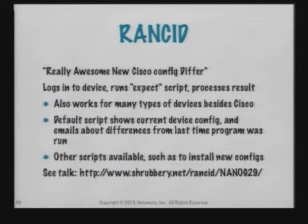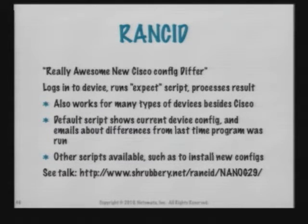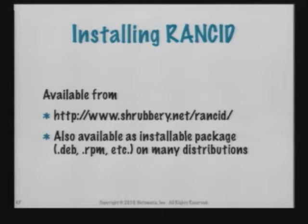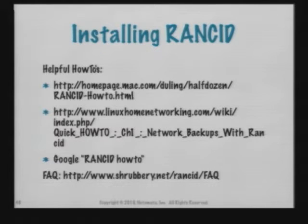Let's move on and talk about Rancid. I halfway wonder if I should skip it because everybody here knows what it is and is using it — but I'll go through it really quickly. Rancid started out as a tool for going out and getting the configs off your Ciscos and sending you diffs of those configs compared to what they were the last time the tool ran. It has been extended to support 37 or more different types of other network devices, products, and vendors. Basically all your major vendors at this point can be handled by Rancid. There was a great talk about it at NANOG many years ago that's still about the best introduction I've found. It's available as an installable package on a lot of different OS distributions.